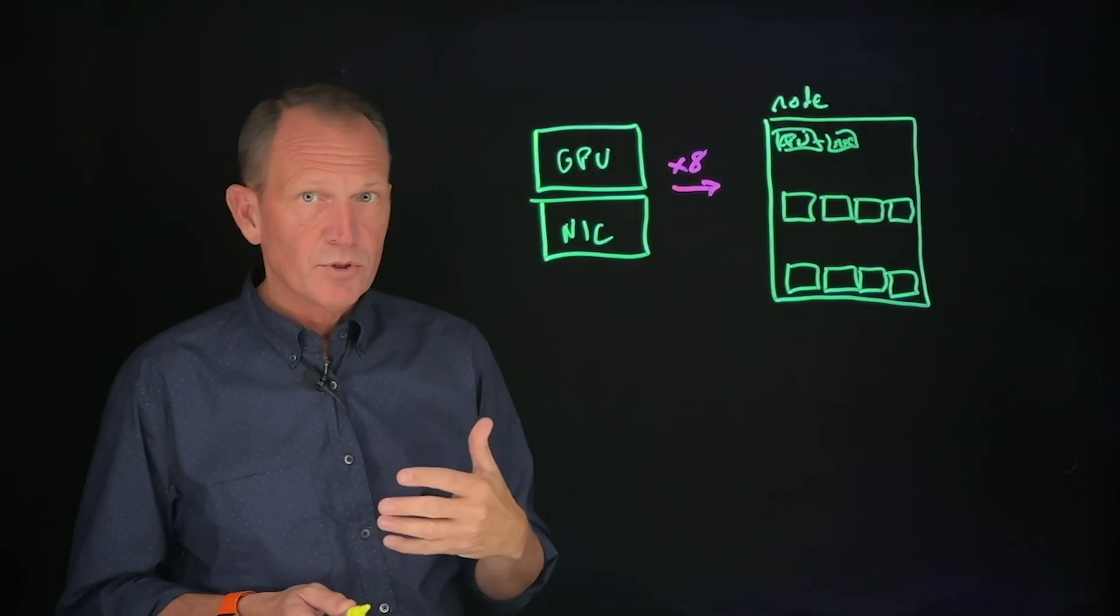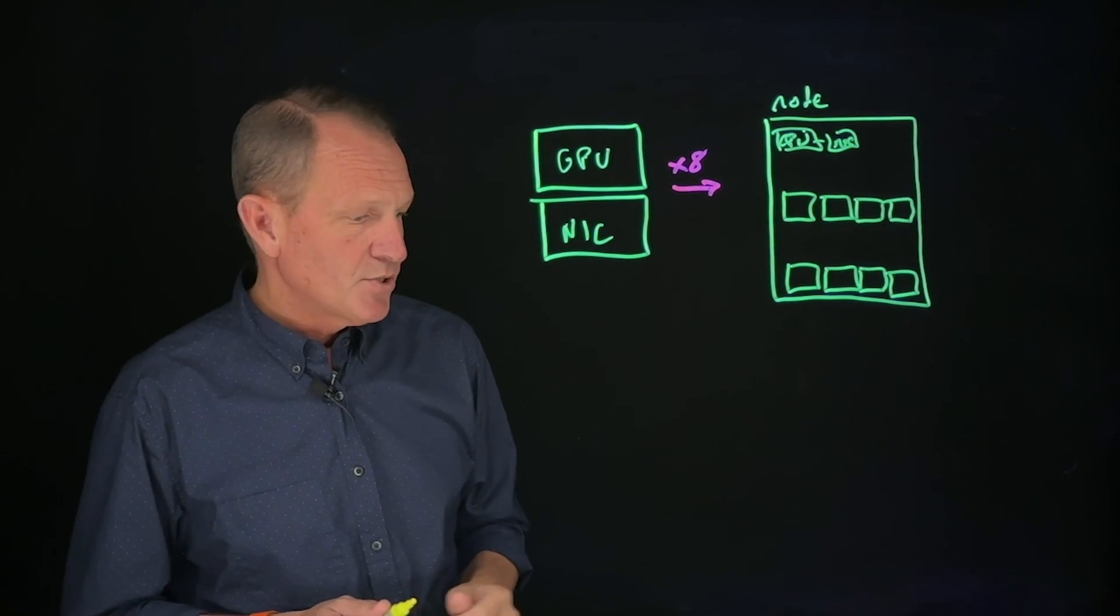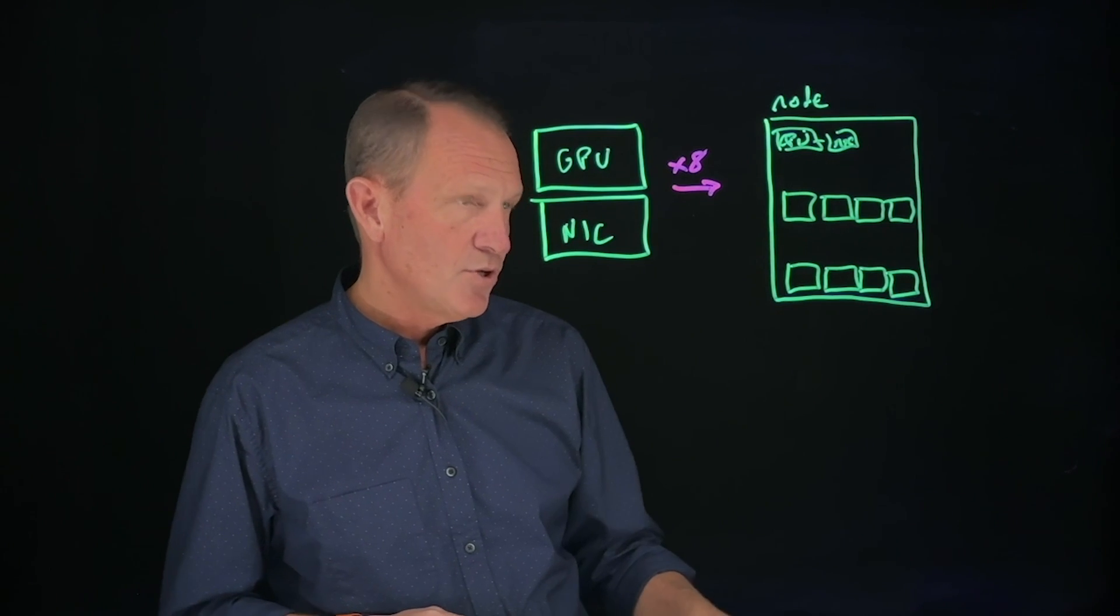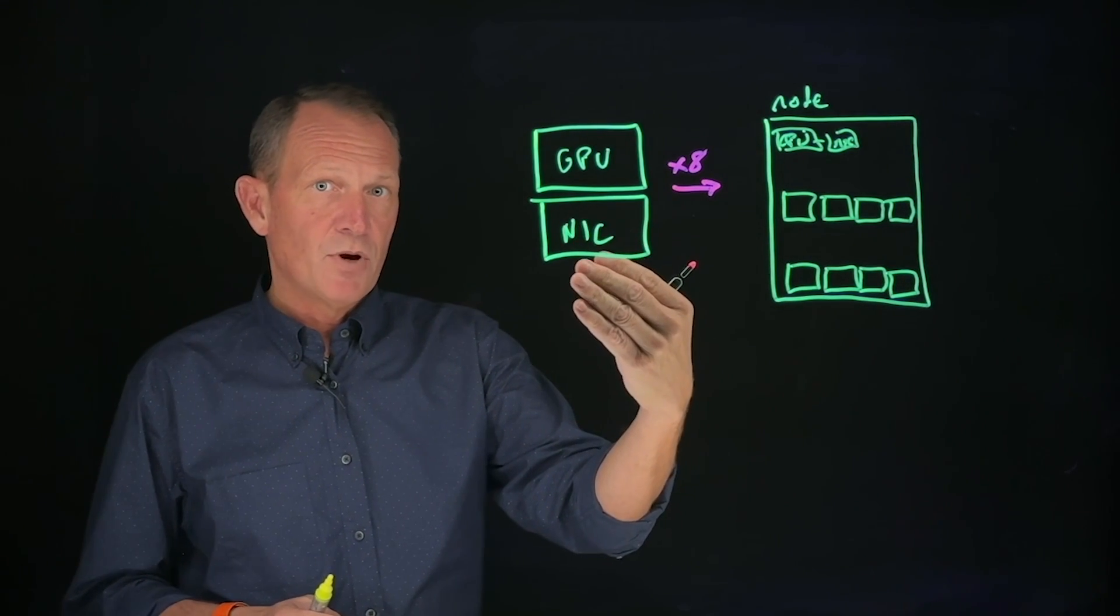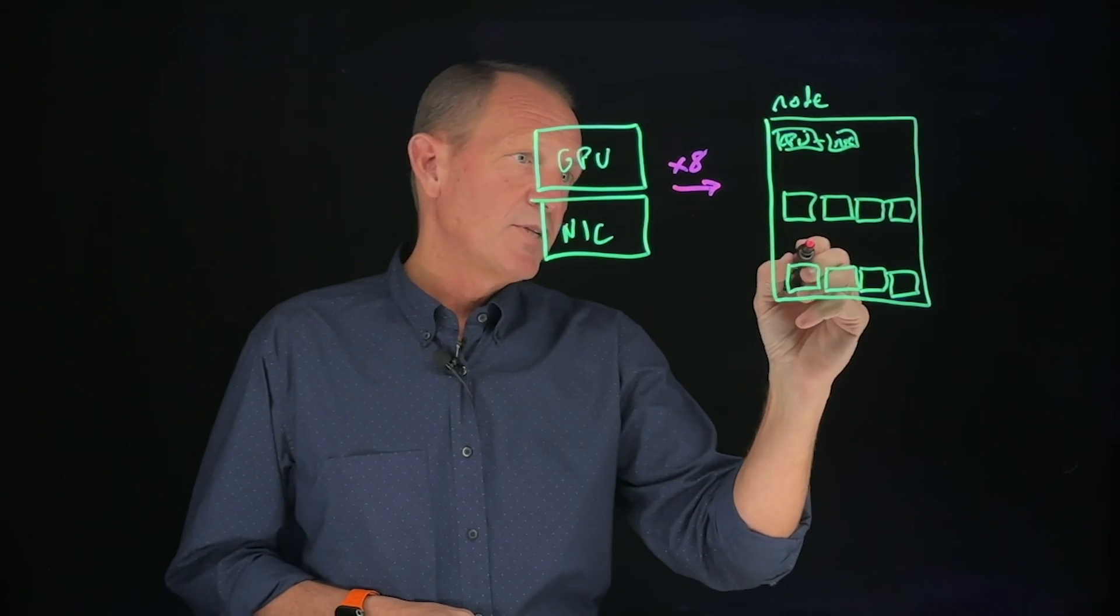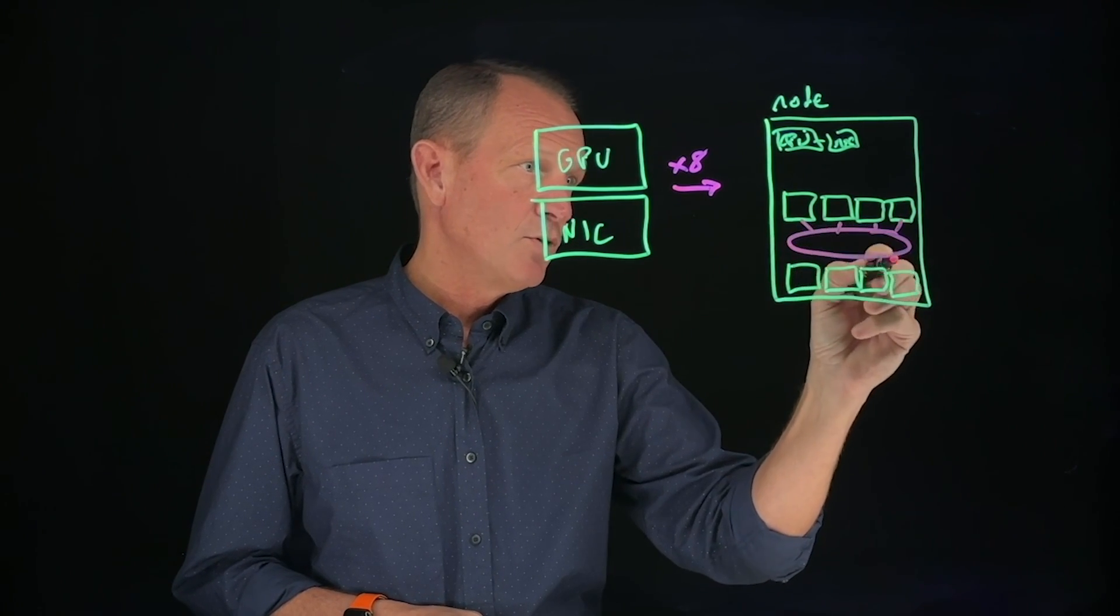Within the node, importantly, in the introduction I talked about scale-up technologies. Scale-up technologies give us the opportunity to not only have networking through the NIC card out into our backend network, but also technologies within the node itself to further connect these GPUs.